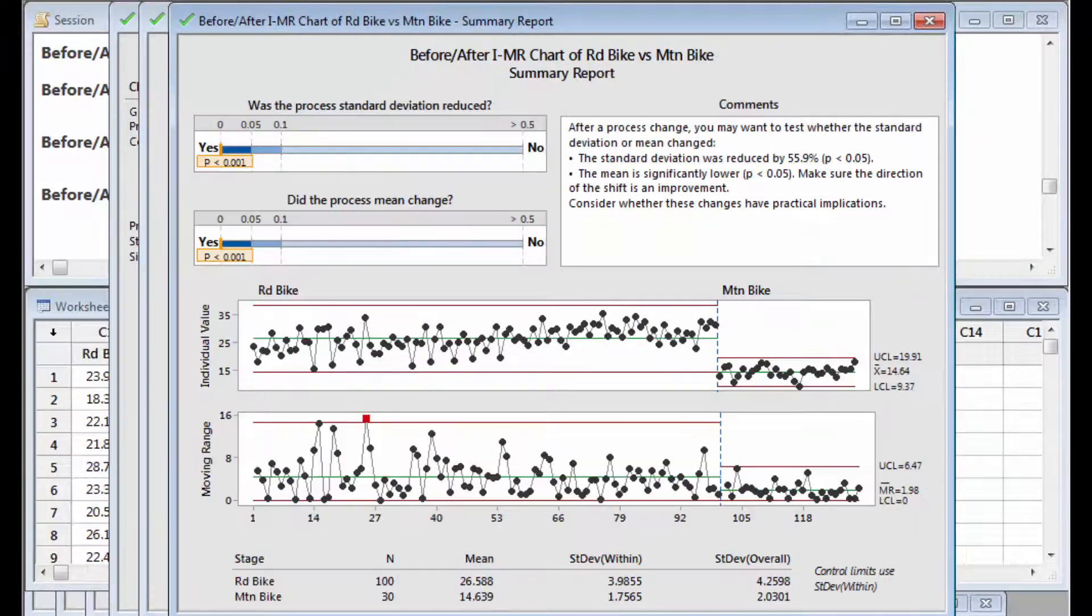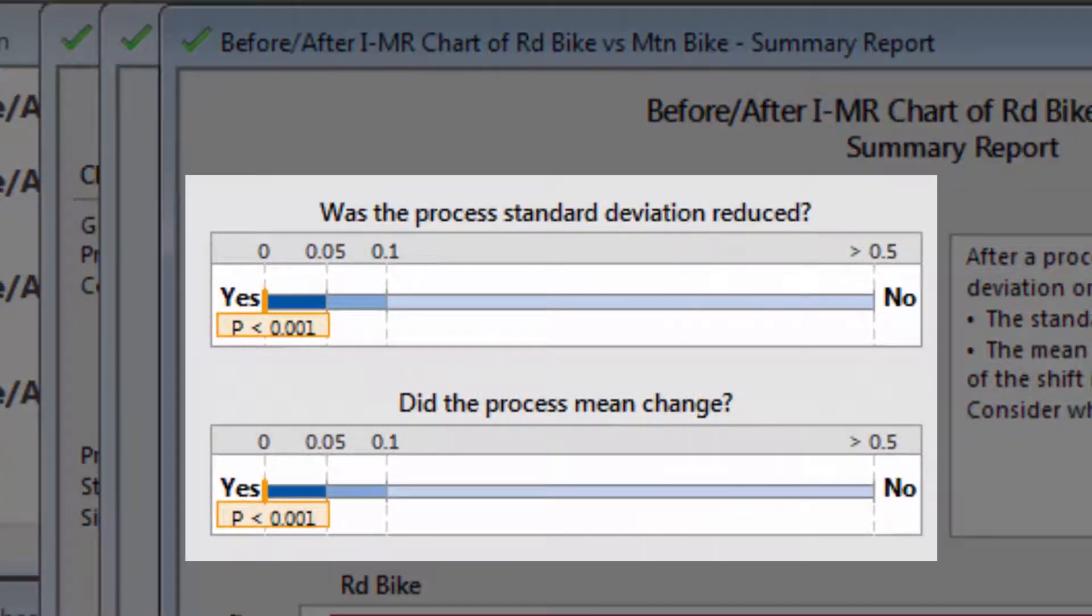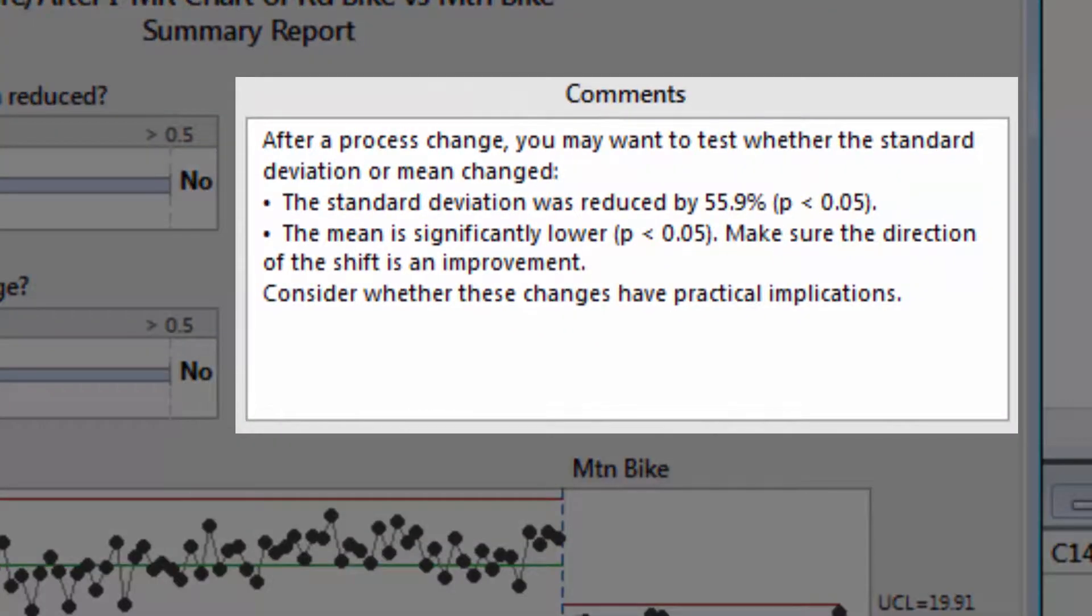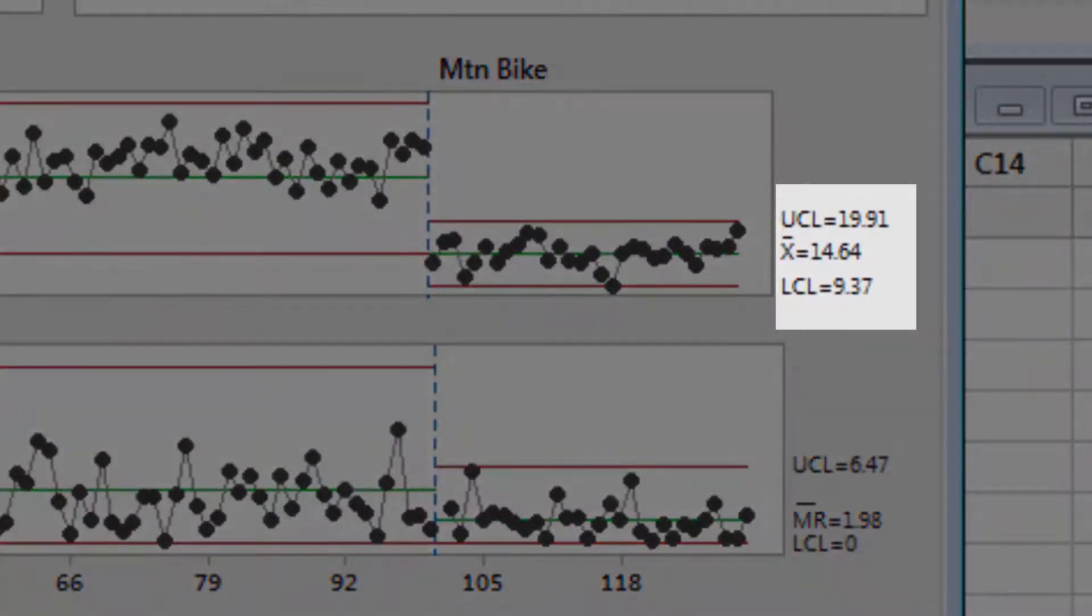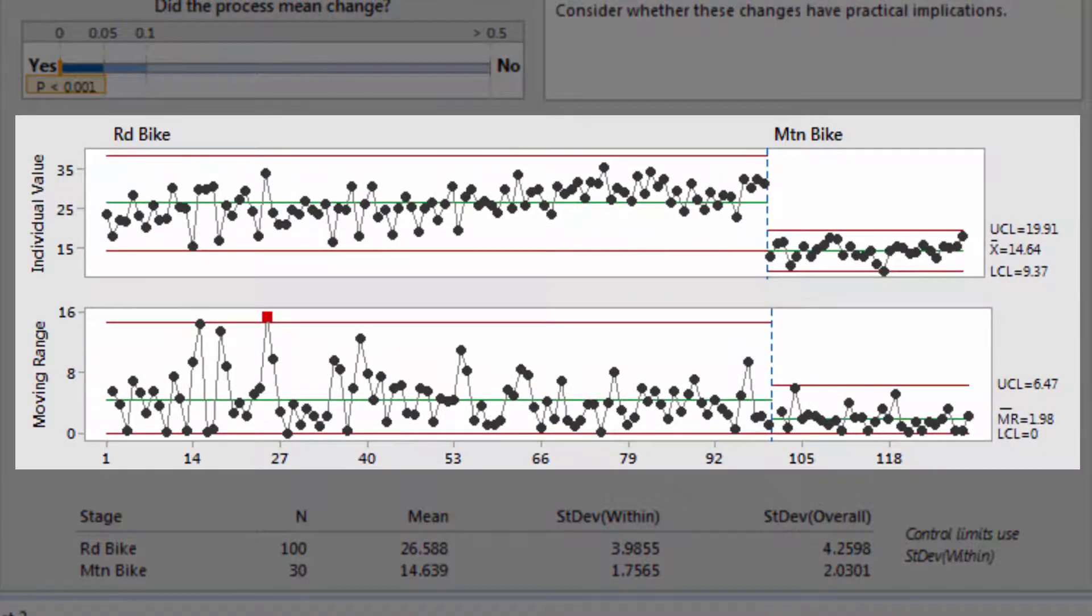The Assistant's Summary report provides the bottom-line results of the analysis. Both the process mean and the standard deviation have been significantly reduced. The standard deviation was reduced by 55.9%. Joel's mean commute time dropped from 27 minutes to less than 15 minutes. Joel's commute process now fits within much tighter control limits and has far less variation.